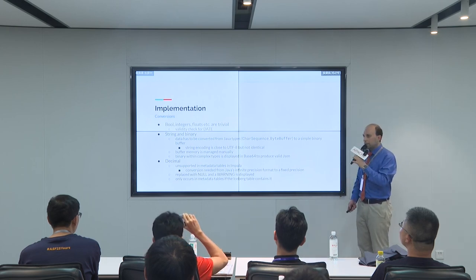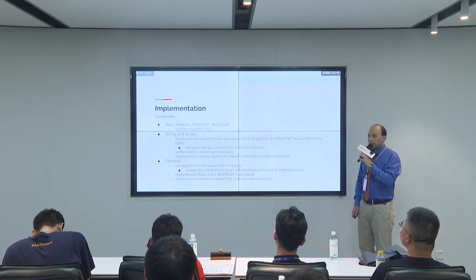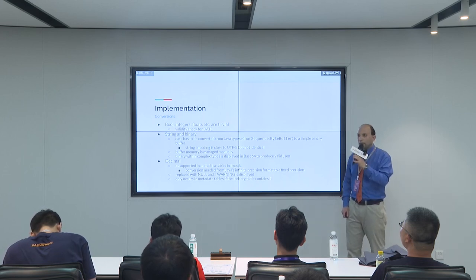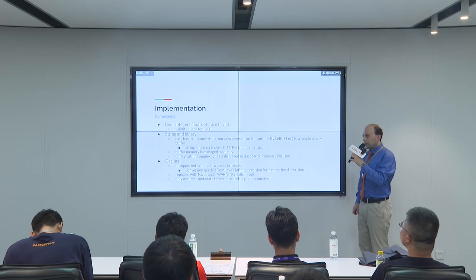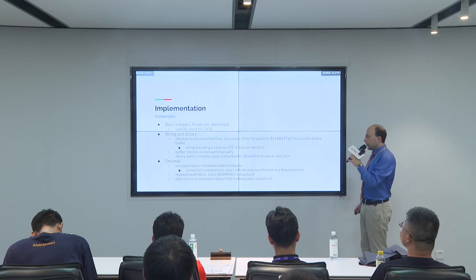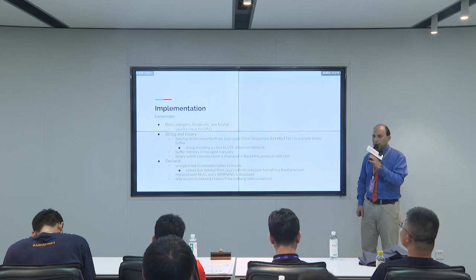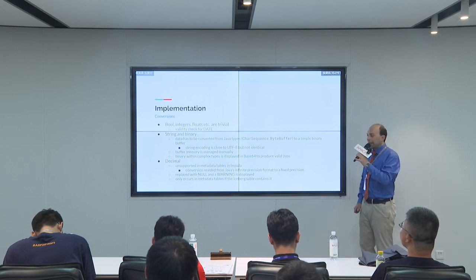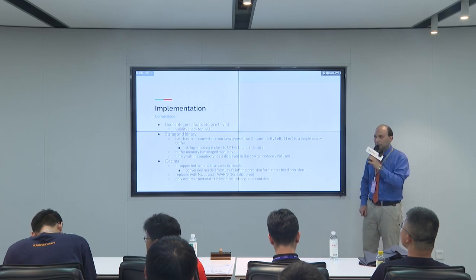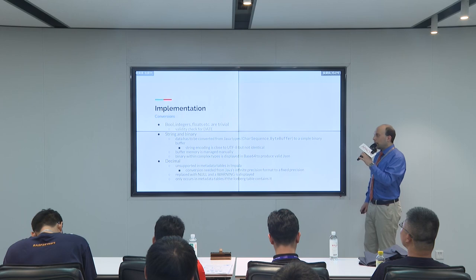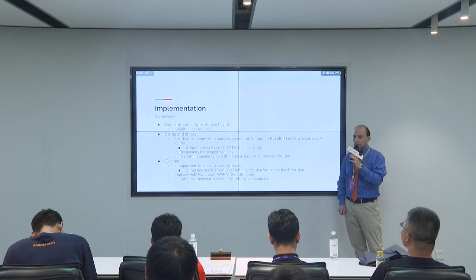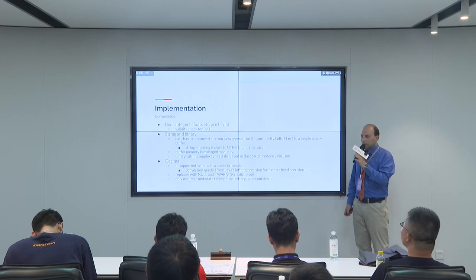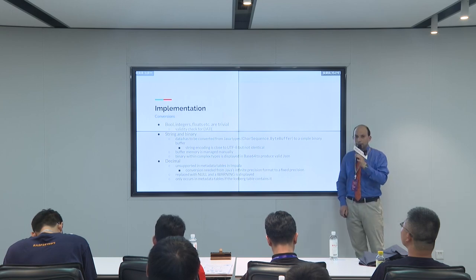A few words about conversions from Java representations to native representations. For some types it is trivial — we don't really have to do anything other than copying the bytes. This is true for booleans, integers, floating point numbers, and also dates, although we've got some validity checking there. For other types it can be more difficult. For strings and binary data, the Java types have to be converted from their original types into a byte buffer, which is then manually managed — it's an exception to local and global references, you always have to manage their lifetimes manually. Java also uses an encoding similar to UTF-8 for strings but not completely the same; in Impala we've chosen to take it as-is.